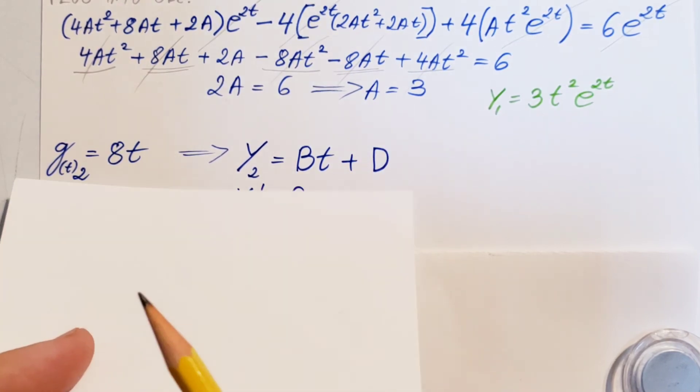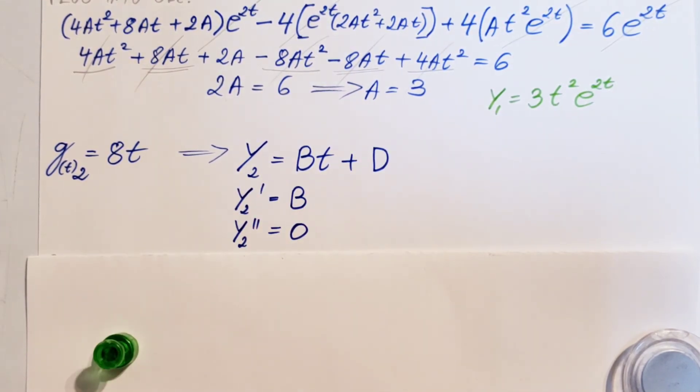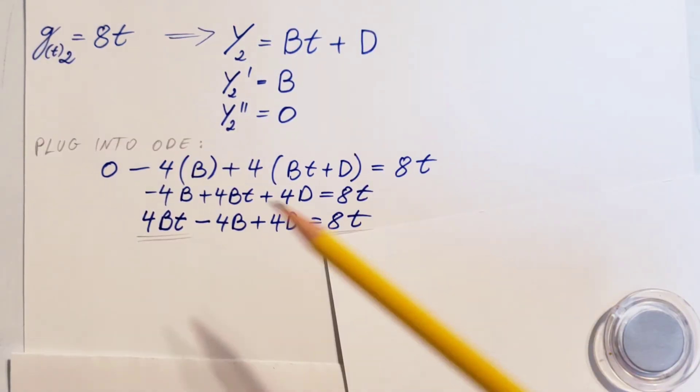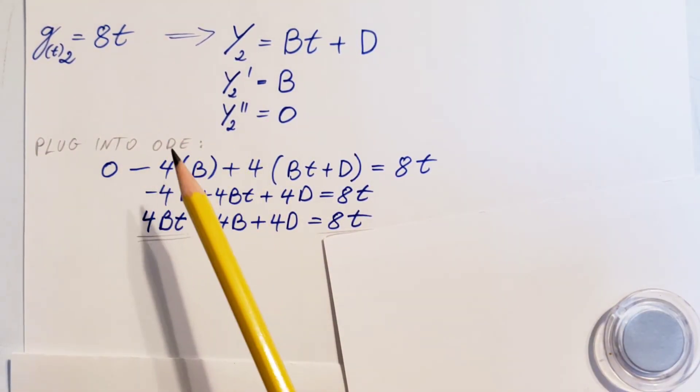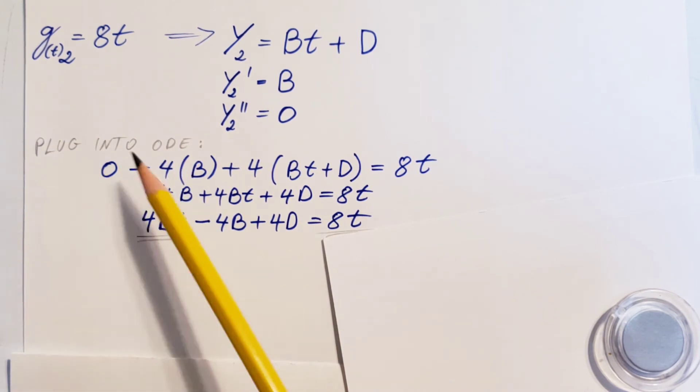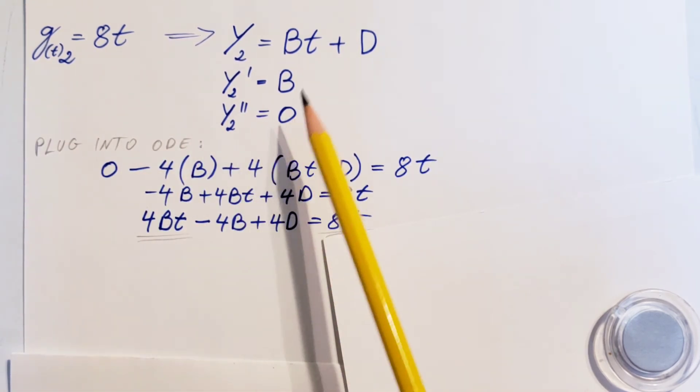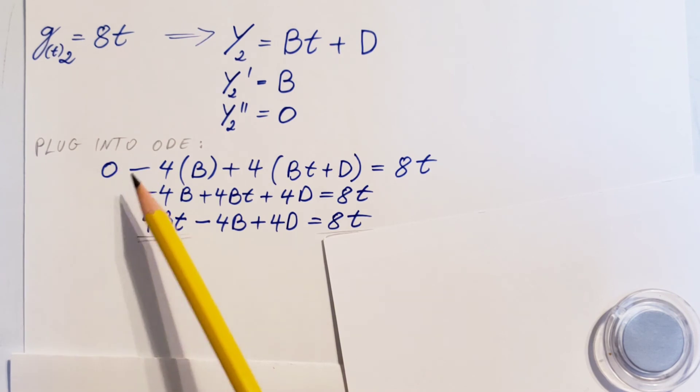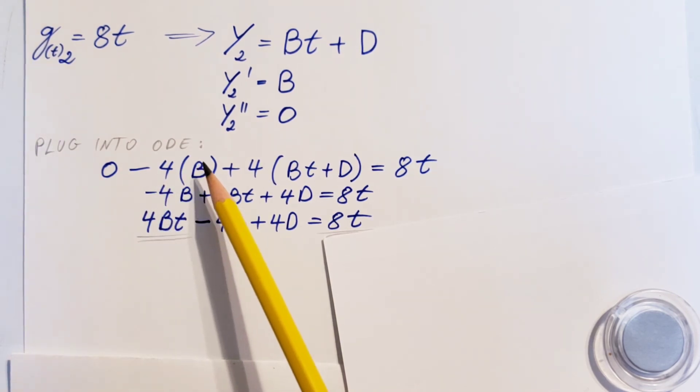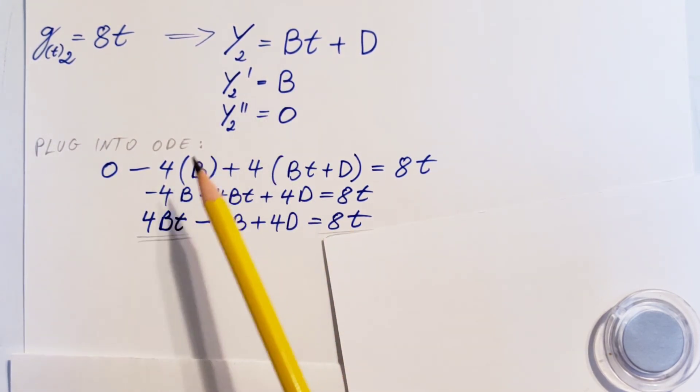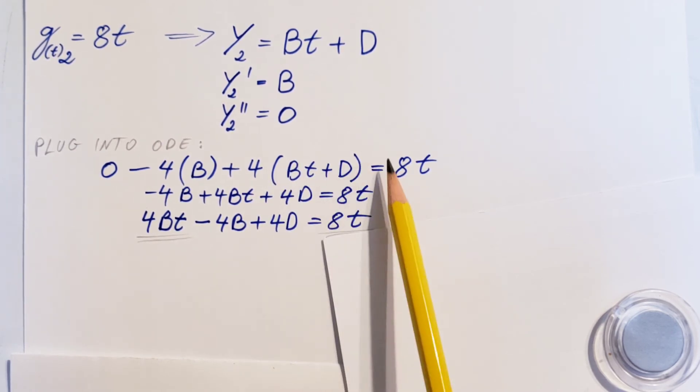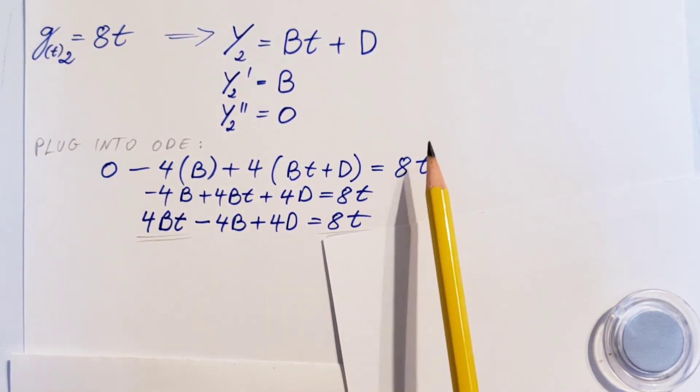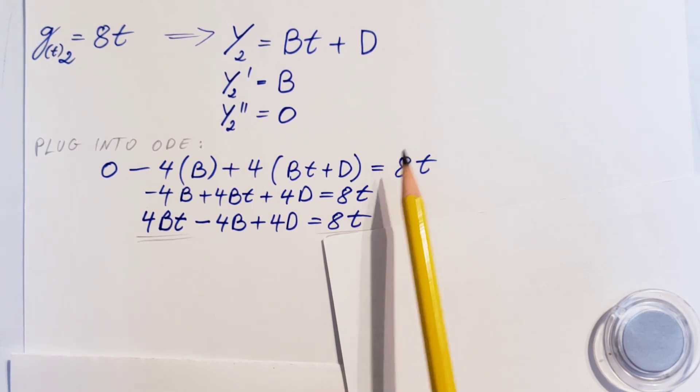Same thing, we need to take first and second derivative for it. Once we did that, we can go, plug it back into our original ODE. y double prime, right here, a big fat zero, minus 4y prime, that is a B, plus 4y, which is Bt plus D, and on the right-hand side, we are working only with this term. So, 8t. Clean it up, cancel and collect terms.